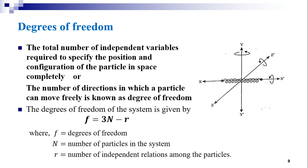For example, in a diatomic molecule there are two atoms, so the number of independent relations among the particles is 1. If it is a triatomic particle, the number of independent relations among the particles will be 2, and so on.